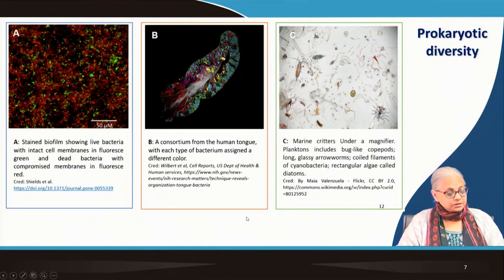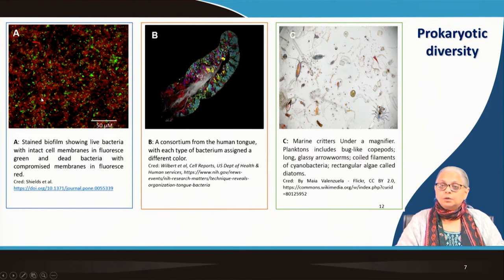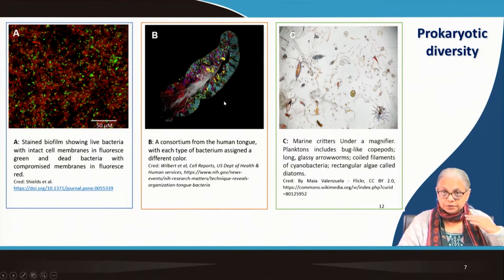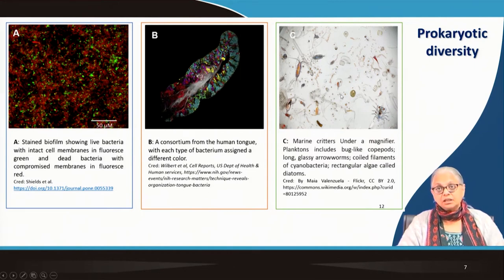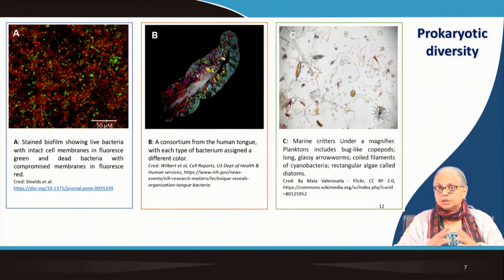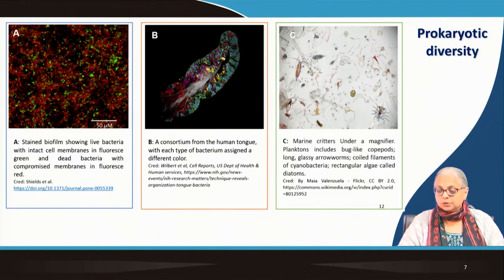There is a lot of prokaryotic diversity in so many different environments. This is what you might find in a wastewater sample, on the surface of the human tongue, and in marine environments. If you take a sample from a freshwater pond, you will find it teeming with life — algae, bacteria, protozoa — all these microorganisms show up under the microscope.